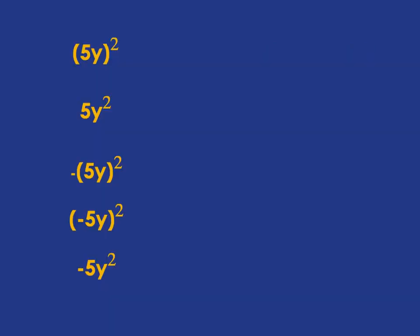Now let's look at what different kinds of squaring we can have. What I'm trying to point out is we need to pay attention to what bits are actually being squared. In the first case, it's the 5y that's being squared — we've got a 5y multiplied by a 5y. To do that, we say 5 times 5 is 25, and y times y is y squared.